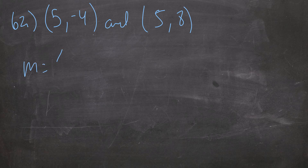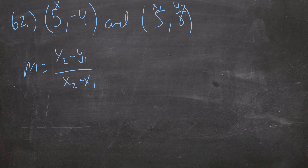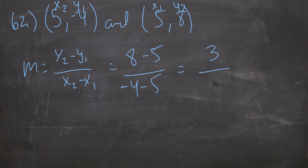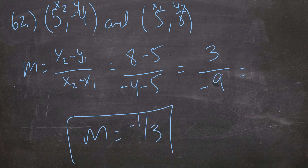Same thing for 62. m equals y2 minus y1 all over x2 minus x1. I'm going to have 8 minus 5 all over negative 4 minus 5. I end up with 3 over negative 9, so my slope is negative 1 third. That's it for 62.